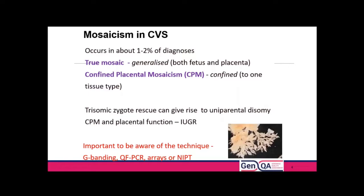Whatever you do with a CVS it's really important to be aware of the technique you're using, the cells it will be looking at, what's happened to those cells — whether they've been passaged in culture, whether you're looking at both tissue cell lines known to exist in CVS (the trophoblast and the mesenchyme), or whether you're looking at information released into the maternal circulation in blood for NIPT.